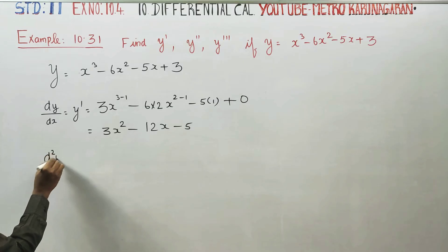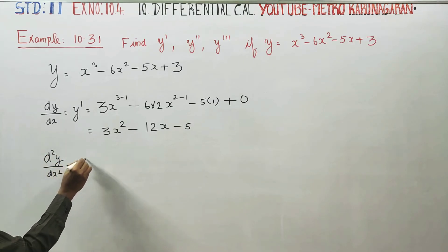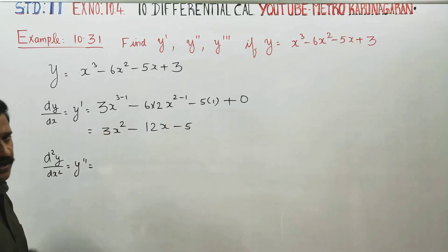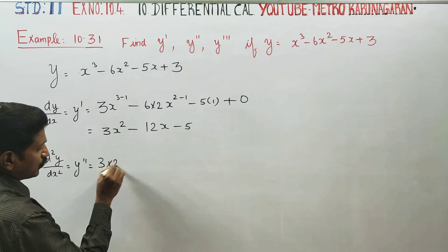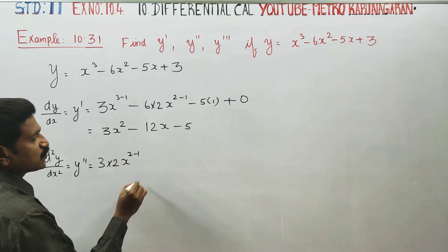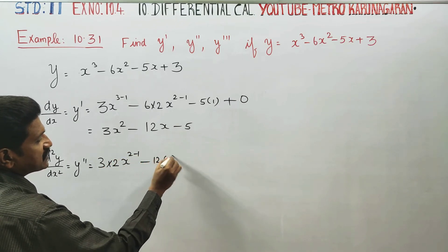Next, second order differentiation: d²y/dx², I am going to say y double dash. Differentiating this, apply the power rule: 3 times 2 gives 6x^(2-1), minus 12 times 1. Therefore, y'' = 6x - 12.